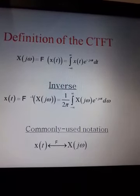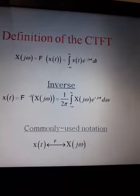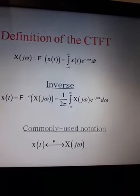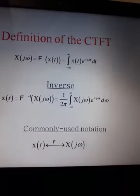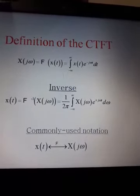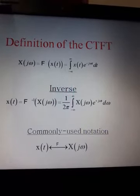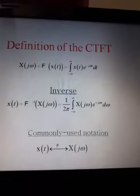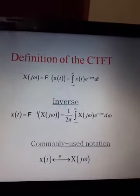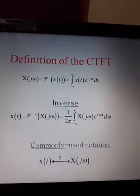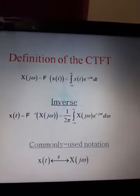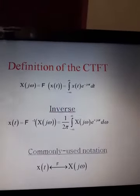Formula of Fourier transform and inverse Fourier transform. The CTFT of x(t) equals X(jω). The formula is: X(jω) = integration from minus infinity to infinity of x(t) e^(−jωt) dt. The inverse Fourier transform gives x(t) = (1/2π) integration from minus infinity to infinity of X(jω) e^(jωt) dω.